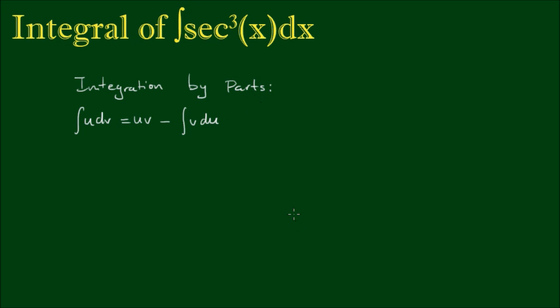We can write sec³ in this form. So if I write sec³ as equal to sec times sec², then the integral of sec³ is equal to the integral of sec(x) times sec²(x) dx.